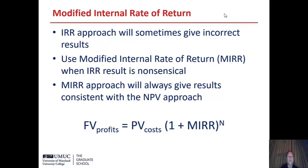Another calculation is the modified internal rate of return. As mentioned, the internal rate of return sometimes gives completely incoherent results, in which case you would use the modified internal rate of return. To calculate the MIRR, you set the future value of the profits equal to the present value of the costs or negative cash flows times (1 plus MIRR) to the N, then rearrange to get MIRR equals (future value divided by present value) to the power of 1 over N, minus 1.